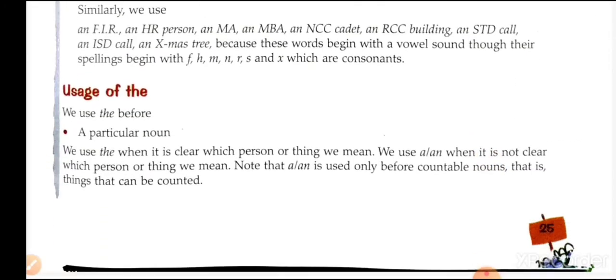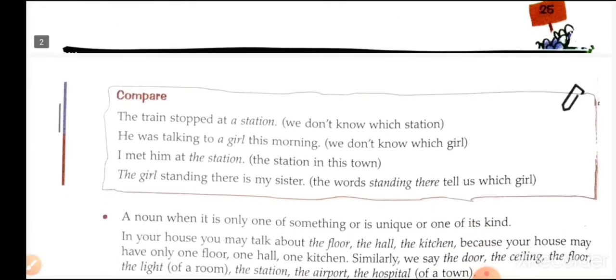Uses of 'the': We use 'the' before a particular noun — when it is clear which person or thing we mean. We use 'a/an' when it is not clear which person or thing we mean. Note that 'a/an' is used only before countable nouns. Compare: 'The train stopped at a station' — we don't know which station. 'He was talking to a girl this morning' — we don't know which girl. 'I met him at the station' — the station in this town. 'The girl standing there is my sister' — the words 'standing there' tell us which girl.